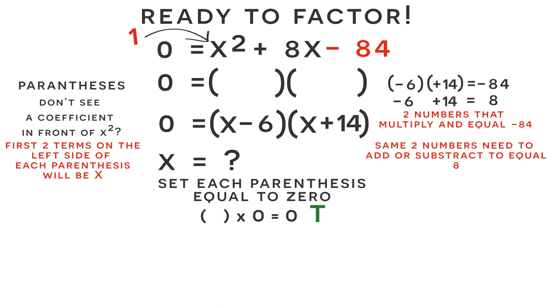So let's start by setting the x minus six parentheses equal to zero. If we solve for x, then we'll get x is equal to positive six. And let's set the x plus 14 parentheses equal to zero. And if we solve for x, then we get x is equal to negative 14.